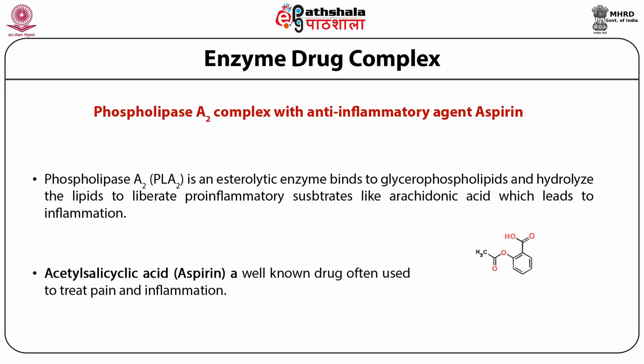Acetylsalicylic acid — aspirin — is a well-known drug often used to treat pain and inflammation. This aspirin is extracted from the willow tree before we knew about the pharmacological effect of this drug. Aspirin has been previously used against these inflammatory pathway enzymes.